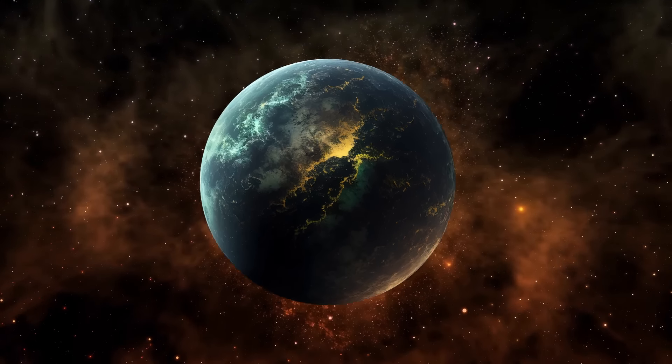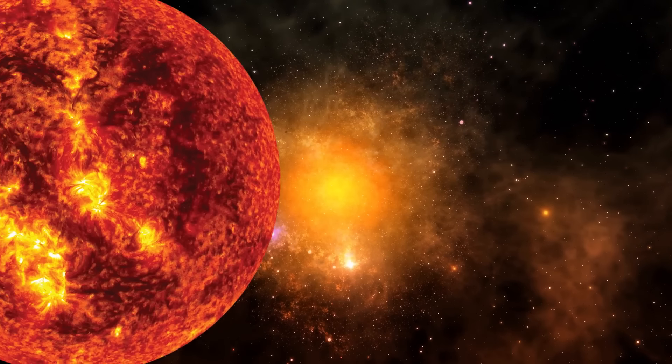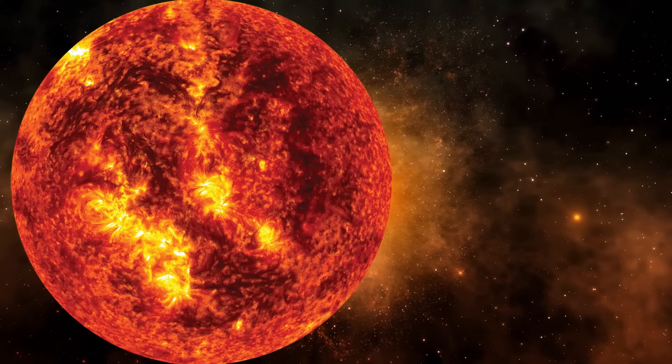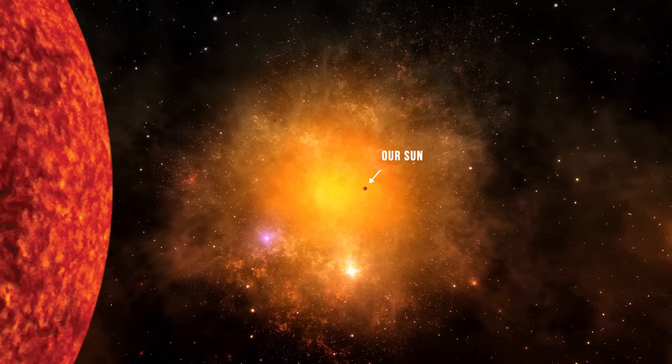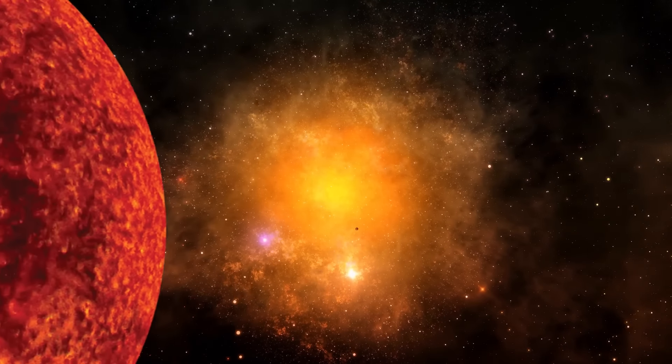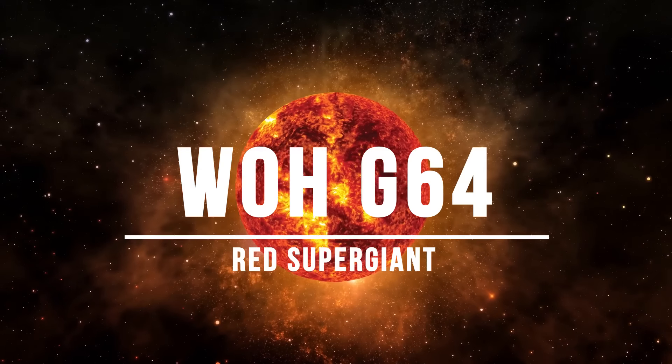What would it be like to live on a planet traveling around a star so huge that, in comparison to it, our sun looks like a tiny speck of dust?